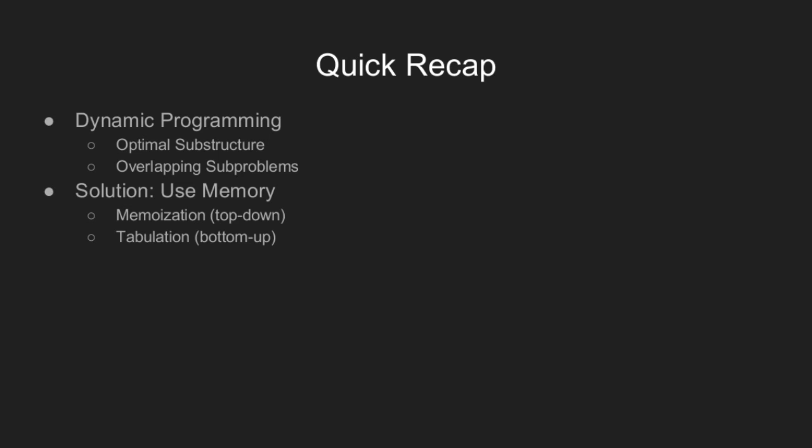In a previous video, we discussed the two main properties of dynamic programming problems, namely the optimal substructure property and the overlapping subproblems property. And we also briefly discussed two techniques to attempt dynamic programming problems, namely the memoization technique and the tabulation technique.